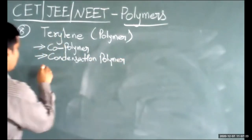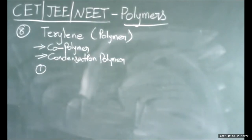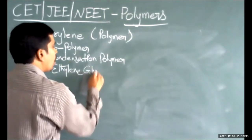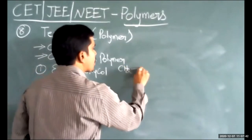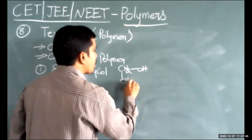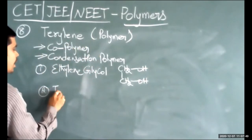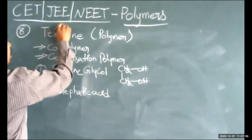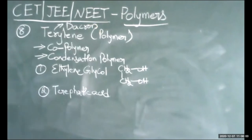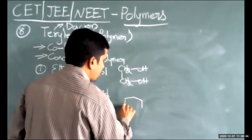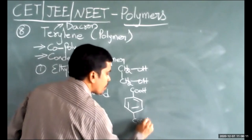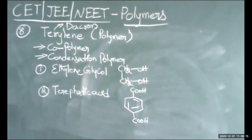Terylene contains two different types of monomer units. The first monomer is ethylene glycol (HO-CH₂-CH₂-OH) and the second is terephthalic acid — a benzene ring with -COOH groups at opposite positions. Terylene is also called Dacron.